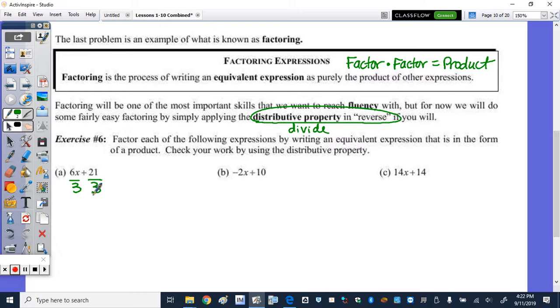So both 6 and 21 are both divisible by 3. And 3 is the largest factor. It's also called the largest factor, a greatest common factor, the GCF. So now when we divide, 6 divided by 3 is 2, bring down the x. And then your sign in the middle, 21 over 3 is 7.